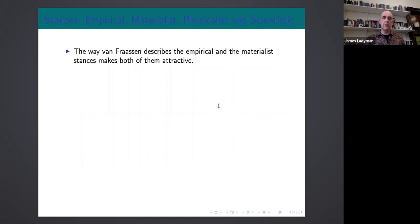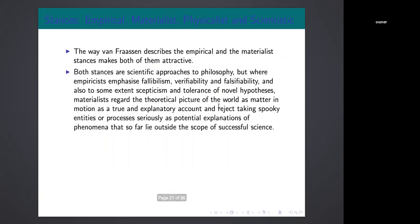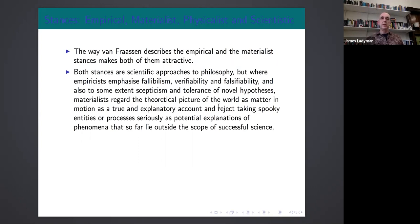So let's talk a little bit about how Van Fraassen conceives of empiricism. What I'm going to do really is suggest that we need to combine elements of what Van Fraassen characterizes as materialism with empiricism to get empiricism properly formulated, which is kind of crazy according to Van Fraassen's view of things but not as I think you can make sense of it. So both the empirical and material stances according to Van Fraassen are scientific approaches to philosophy, but where empiricists emphasize fallibilism, verifiability and falsifiability and also to some extent skepticism and tolerance of novel hypotheses, materialists go too far by regarding the theoretical picture of the world as matter in motion as a true and explanatory account. And then they go on to draw negative conclusions, rejecting certain kinds of explanations or certain kinds of projects within science like the project of investigating spiritual substance.